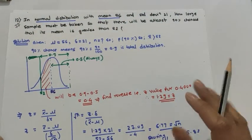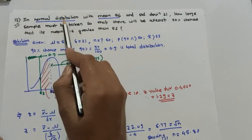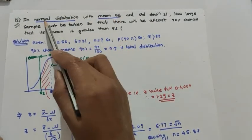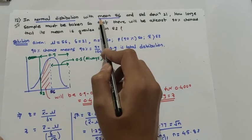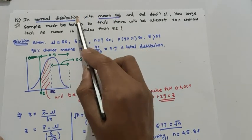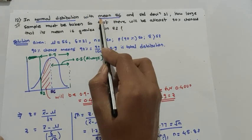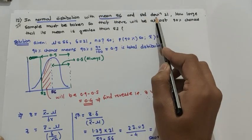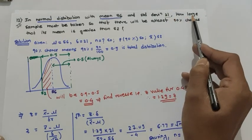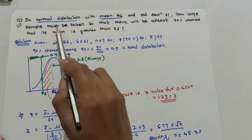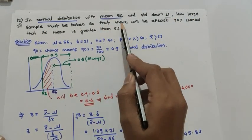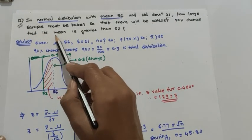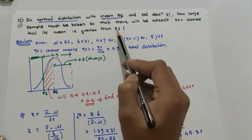The example states: in a normal distribution with mean 56 — that is, population mean mu is given as 56 — and standard deviation is given as 21, how large a sample must be taken so that there will be at least 90 percent chances that the sample mean is greater than 52?